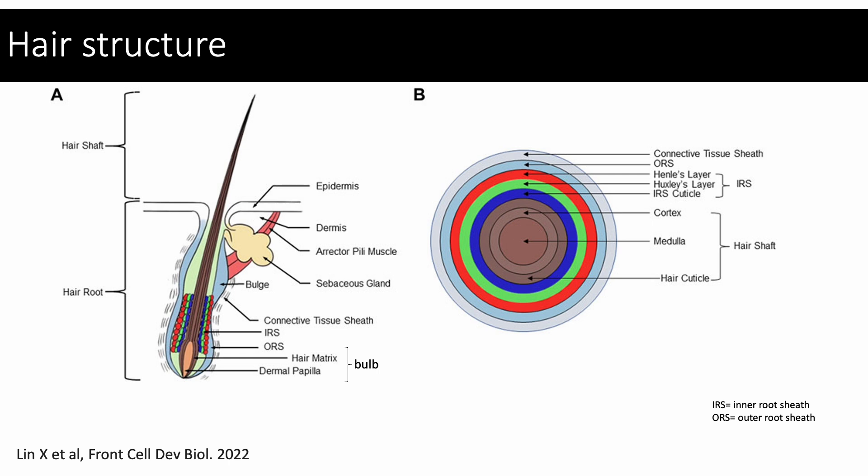The dermal papilla instigates and directs hair growth, and the hair matrix is the actively growing portion of the hair follicle and produces the hair shaft. Diagram B shows a cross-section through the bulb region, where you can appreciate the consecutive layers. The hair shaft lies in the inner aspect and is formed by the medulla, cortex, and hair cuticle. This is surrounded by the inner root sheath, outer root sheath, and connective tissue sheath.